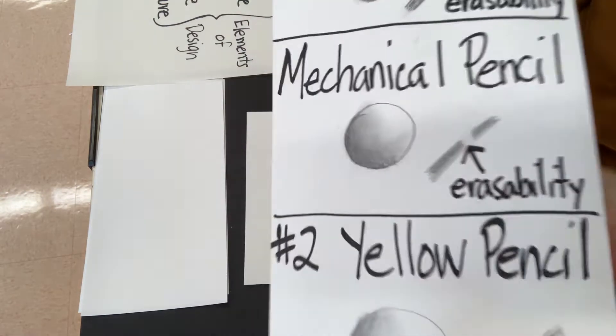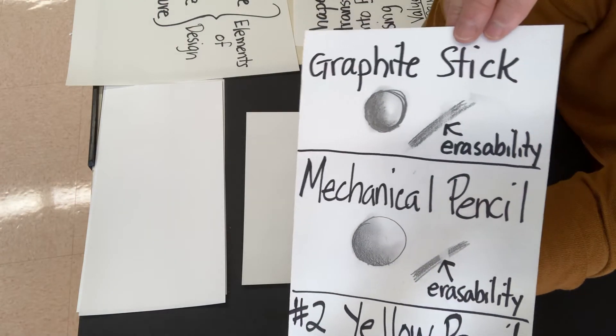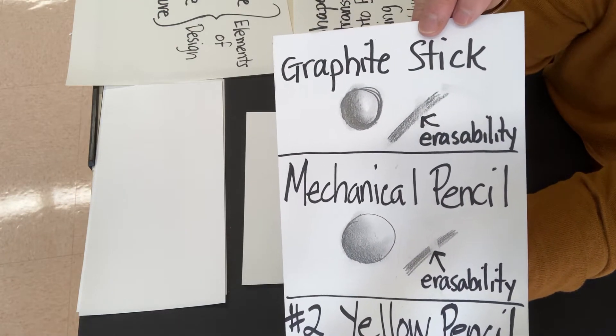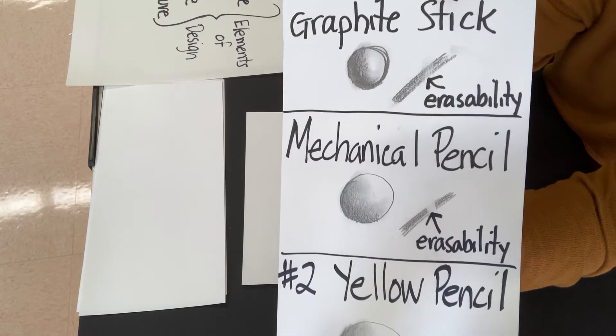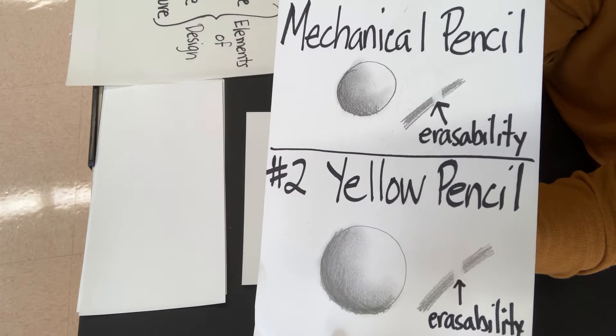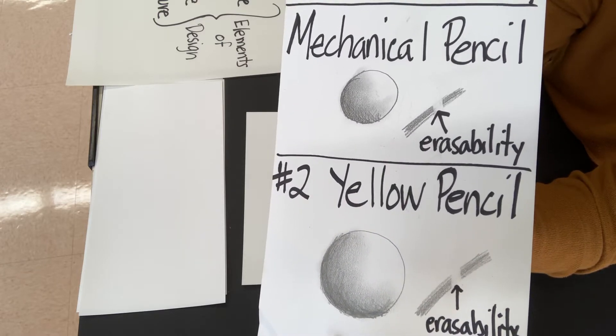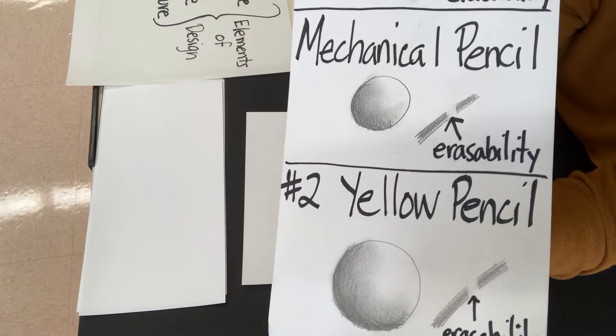I do want to point out one of the things about these three tools is its erasability and its smudging quality. There's a difference between blending and creating value with just one tool. Blending is when you take two materials and you blend them together to either create value or to create a new color.